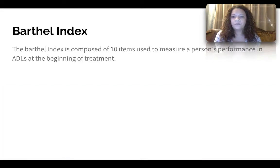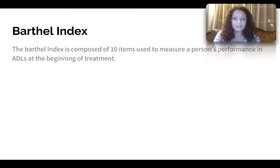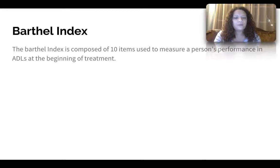The Barthel Index is the first assessment we're covering. It's composed of ten items used to measure a person's performance in ADLs at the beginning of treatment. Typically, a patient will come in and your supervising OT will do the evaluation and perform most of the Barthel, but they might assign a few of the assessments for you to complete.